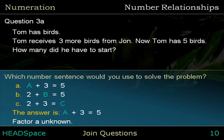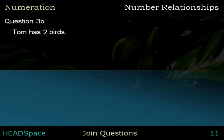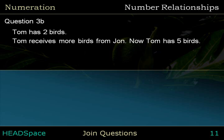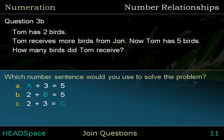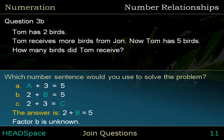Question 3b. Tom receives more birds from John. Now, Tom has five birds. How many birds did Tom receive? Which number sentence would you use to solve the problem? The answer is: two plus blank equals five. Factor B is unknown.